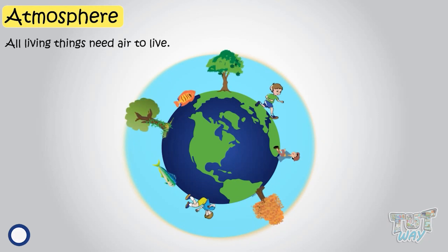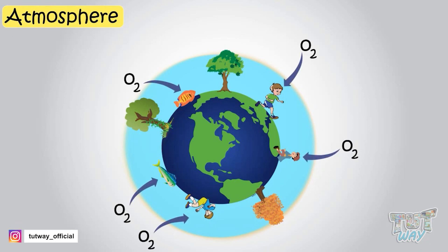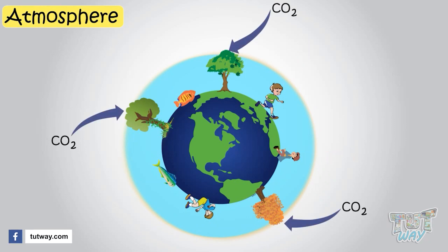This layer extends up to many kilometers above the surface of the earth. All living things need air to live. All animals breathe in oxygen which they get from air. All plants breathe in carbon dioxide which too they get from air. So there can be no life without air.